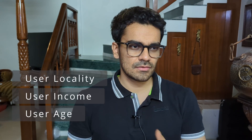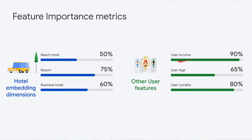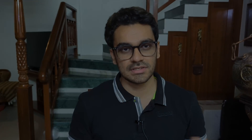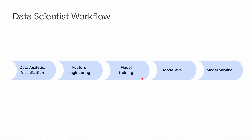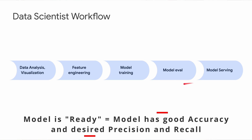Once we have all these hotel embeddings created, we can also bring in user data — for example, user age, user income, user locality — which is crucial to understand before recommending hotels. Once we have features from different visualizations, we'll find out which feature is most important. After selecting the most important features and doing feature engineering, we'll do model building. We might use matrix factorization or even a neural network, and we'll choose different hyperparameters like learning rate or epochs, then train the model. We'll do cross-validation, try different sets of hyperparameters, and finally when the model is ready, push it on an endpoint. All these things fall under the role of a data scientist.